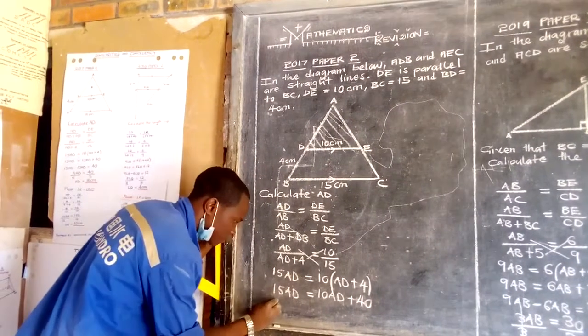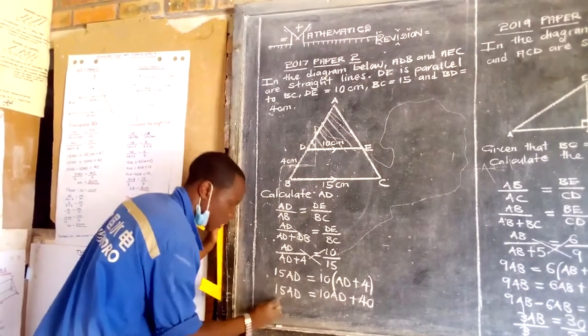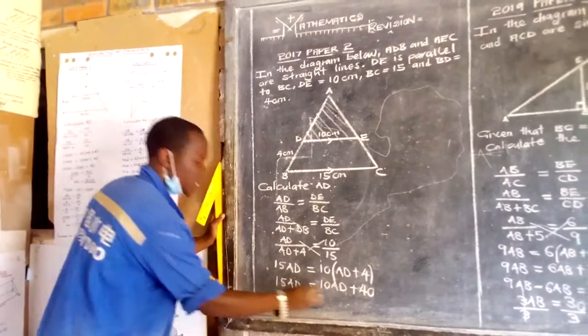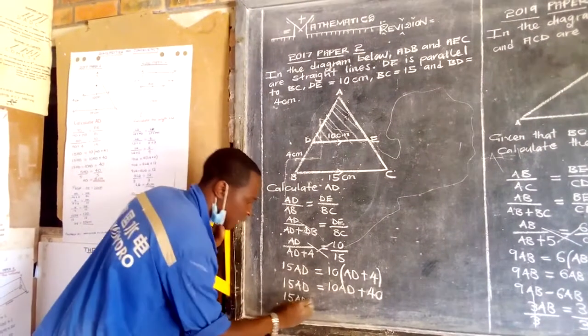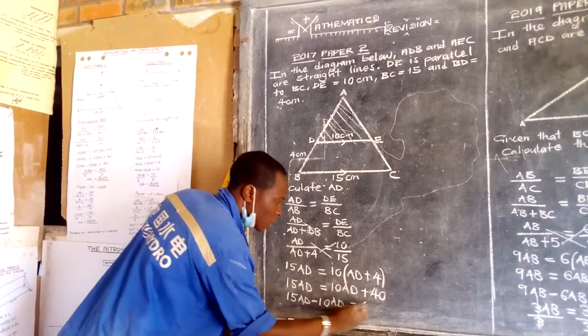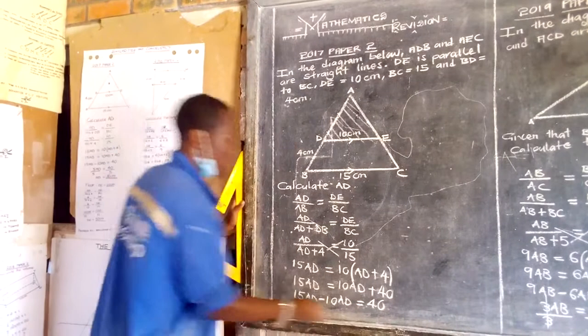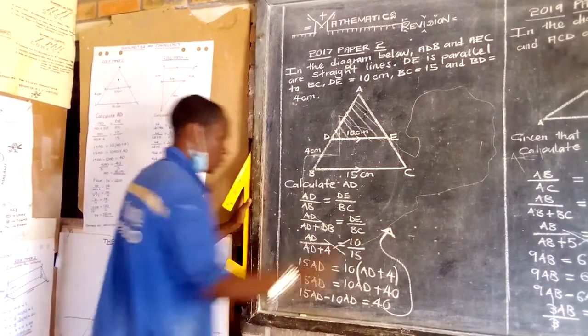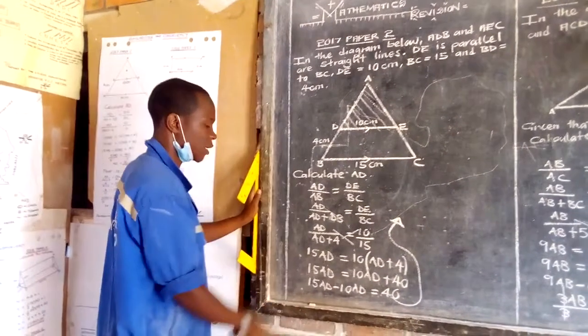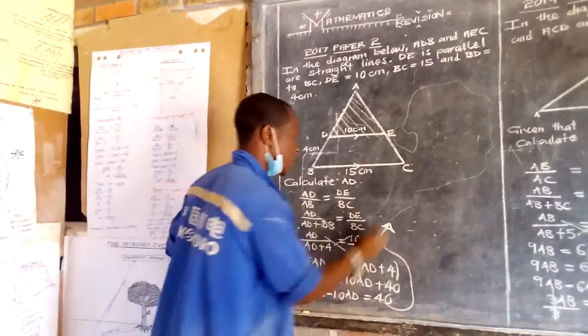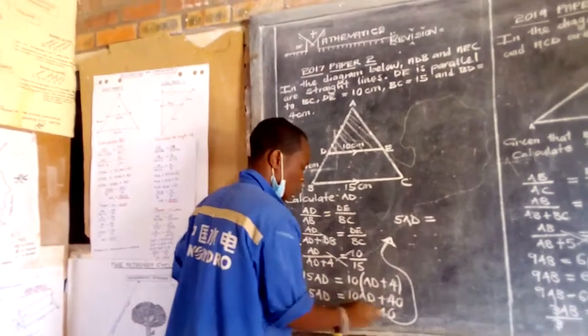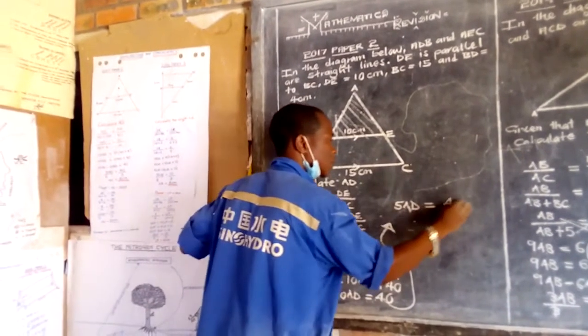Then you maintain or you collect like terms together. So you say 15 AD minus 10 AD is equal to 40. When you find the difference of 15 AD minus 10 AD, I am going to obtain 5 AD is equal to, you maintain your 40. This side is equal to 40.